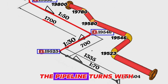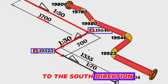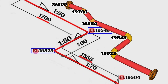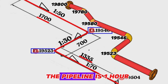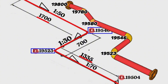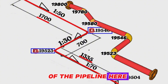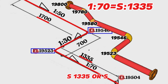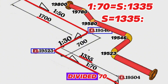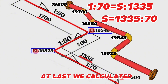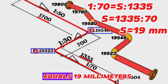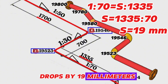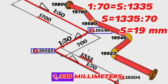Finally, the pipeline turns with a 90-degree elbow to the south direction and travels for a length of 1,335 millimeters. The slope symbol ratio in this part of the pipeline is 1:70. We calculate: 1:70 = S/1335, so S = 1335 ÷ 70 ≈ 19 millimeters. This means the height of the pipeline drops by 19 millimeters over a distance of 1,335 millimeters.